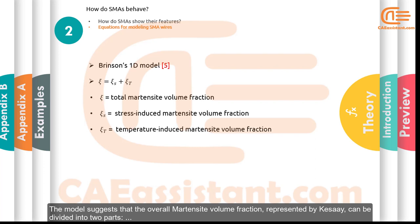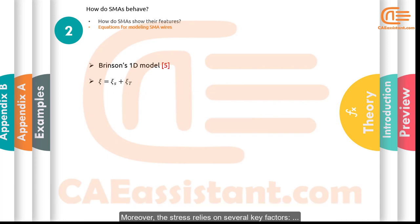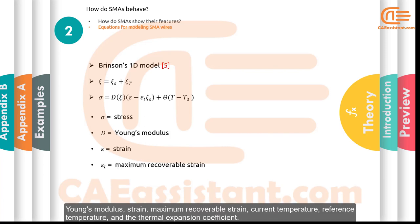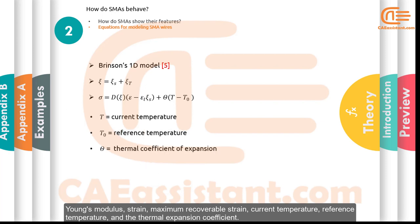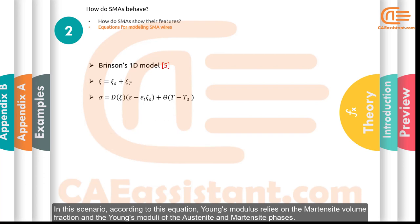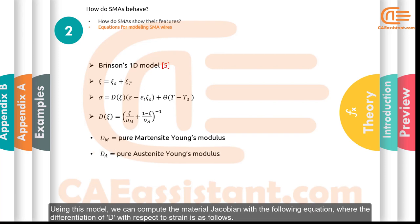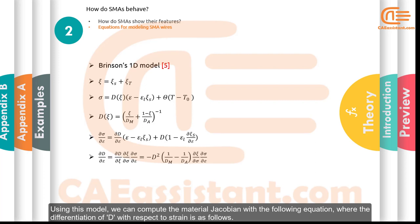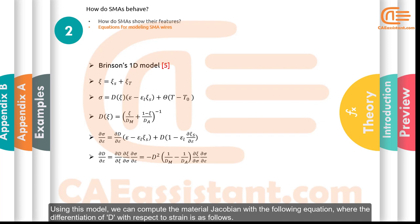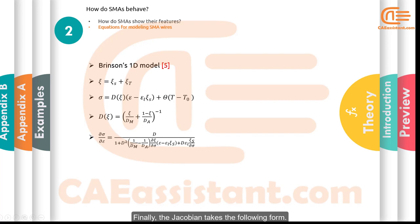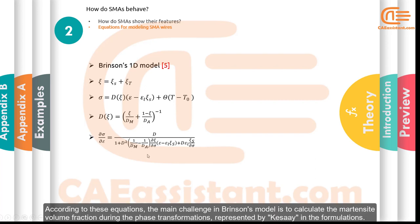The martensite volume fraction represents the volume fraction of material that has transformed to the martensite phase. The overall martensite volume fraction, represented by ξ (psi), can be divided into two parts: the stress-induced martensite volume fraction and the temperature-induced martensite volume fraction. The stress also relies on key factors including Young's modulus, strain, maximum recoverable strain, current temperature, reference temperature, and the thermal expansion coefficient. Young's modulus depends on the martensite volume fraction and the Young's moduli of the austenite and martensite phases. Using this model, we can compute the material Jacobian by differentiating the stress with respect to strain.